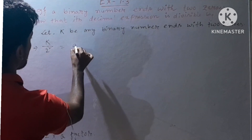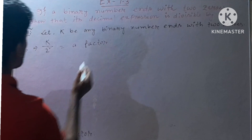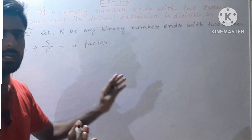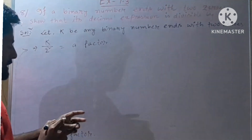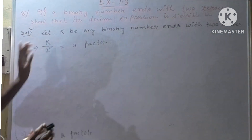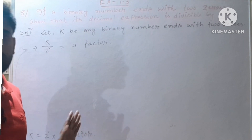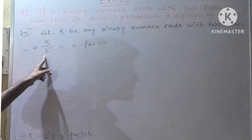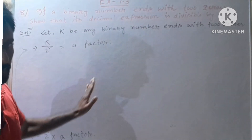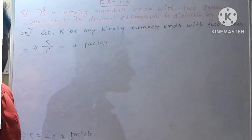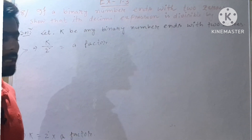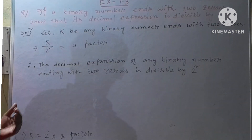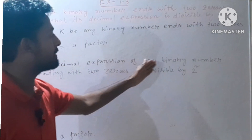This means k has 2 squared as a factor. So k, any binary number ending with two zeros, is divisible by 2 squared. Therefore we have proved that the decimal expansion of any binary number ending with two zeros is divisible by 2 squared.